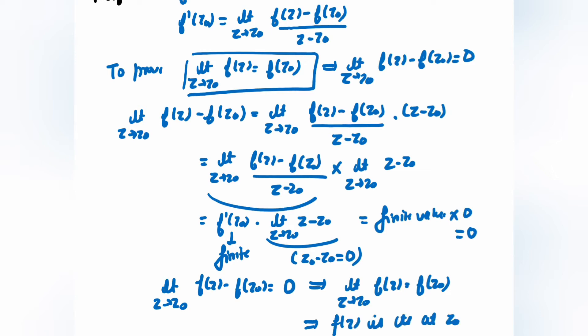Since z₀ was an arbitrary point, we have proven continuity at every point. That means every differentiable function is continuous. But the converse is not true — if a function is continuous, it does not imply it is differentiable. But if it is differentiable, it is definitely continuous.